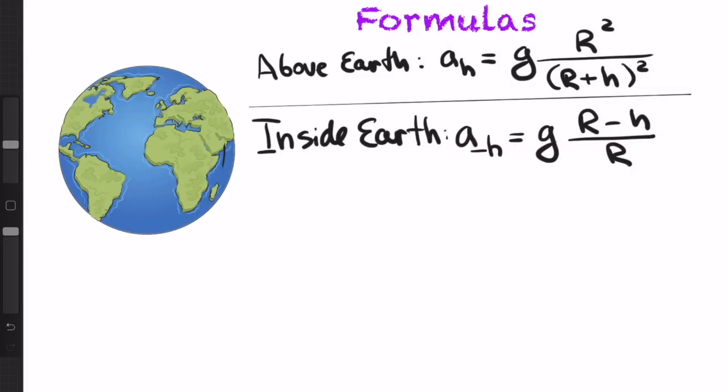Right, so now we got both formulas. We got a formula for acceleration above Earth and for one inside Earth. And the only thing left is to equate both quantities. And g will cancel out. So the equation that we need to solve for h is the following.